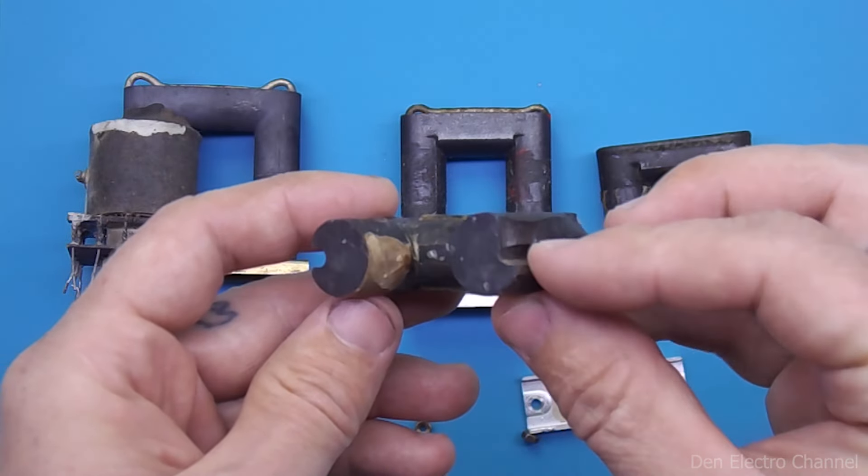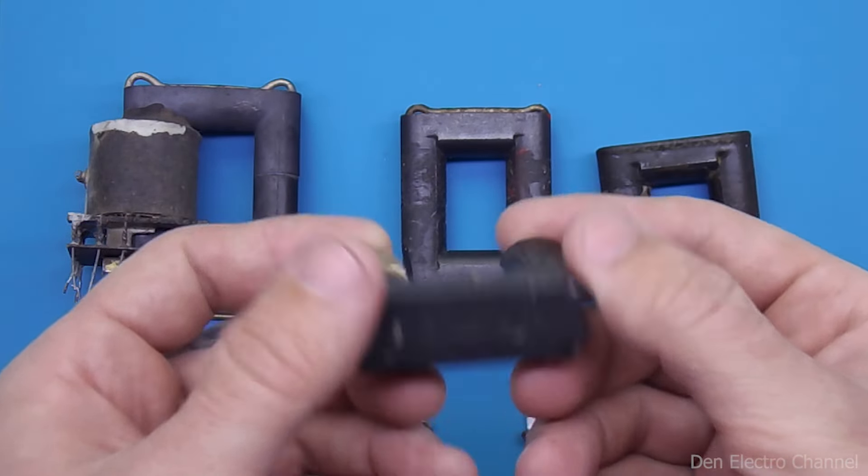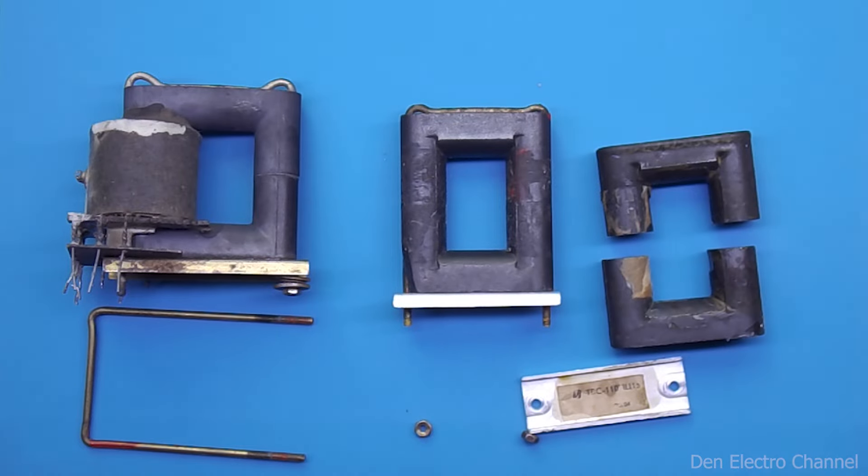If during disassembly the ferrite breaks into at least 10 pieces, it's not a problem, it can always be glued together.